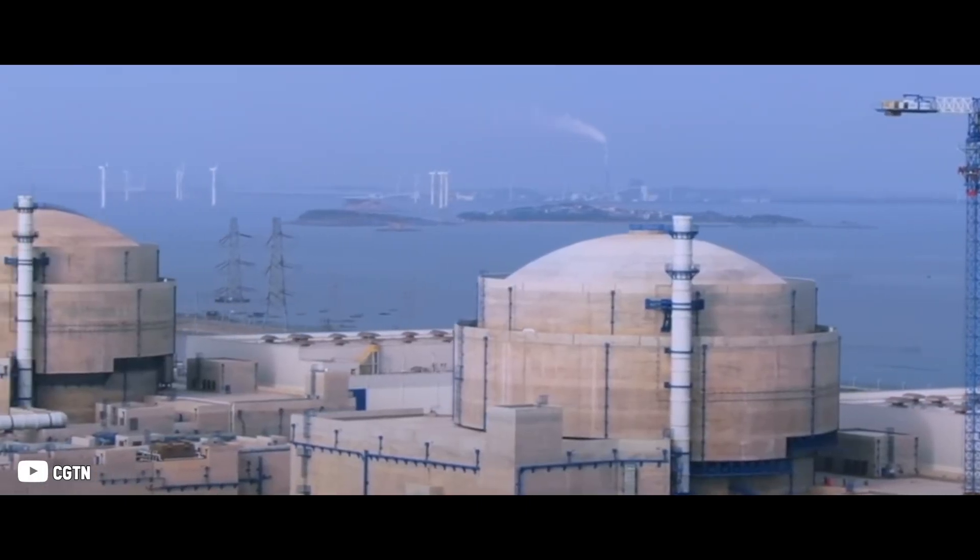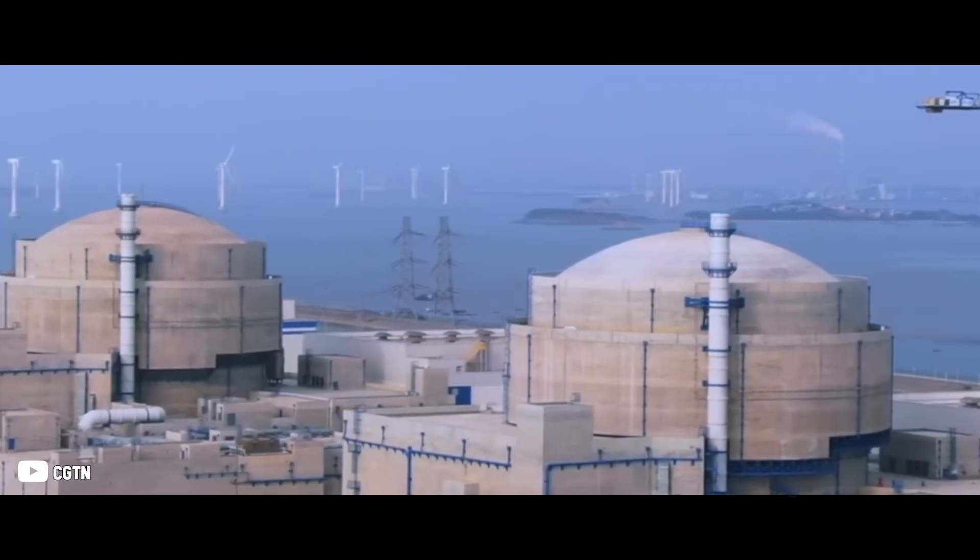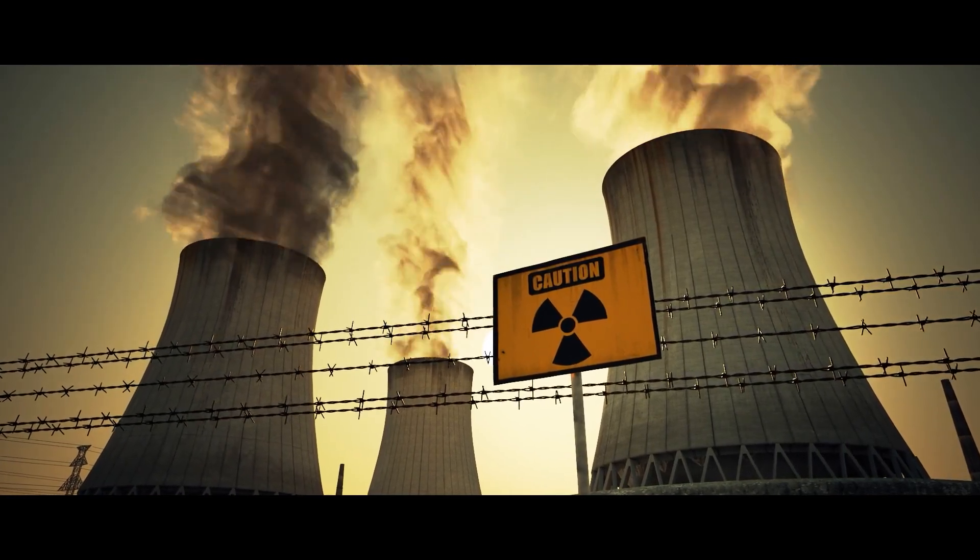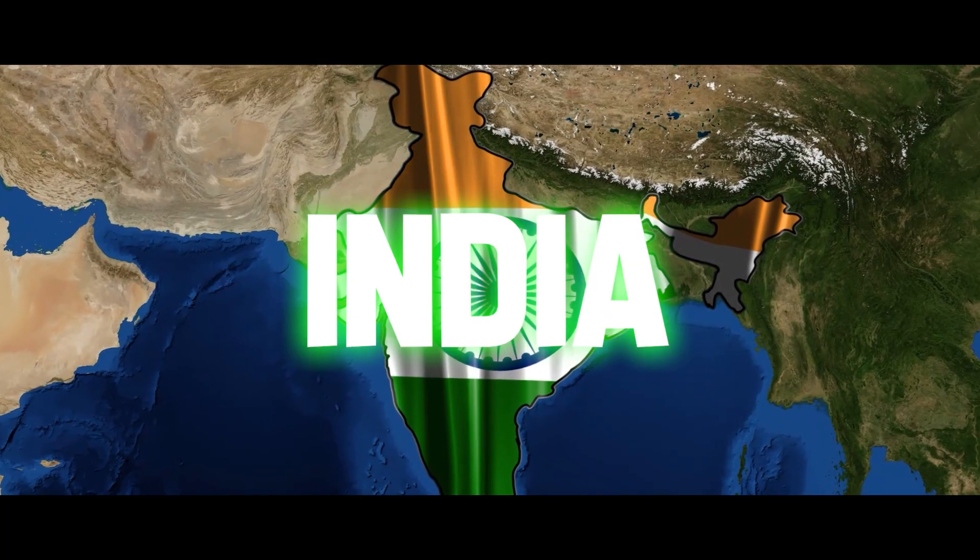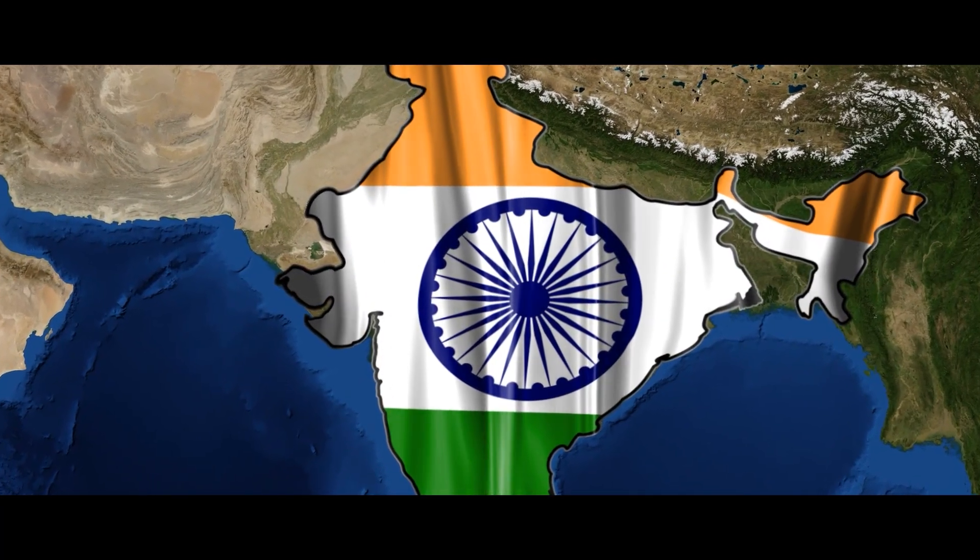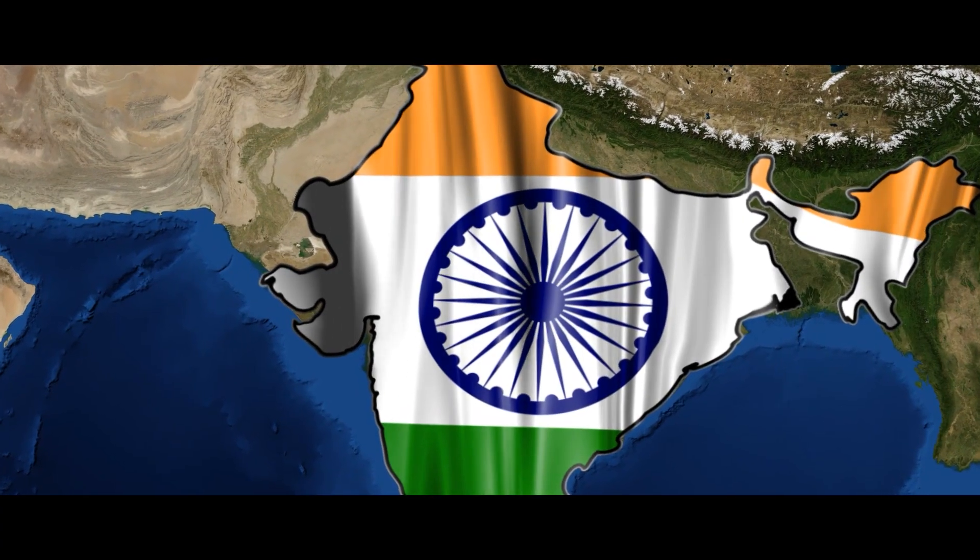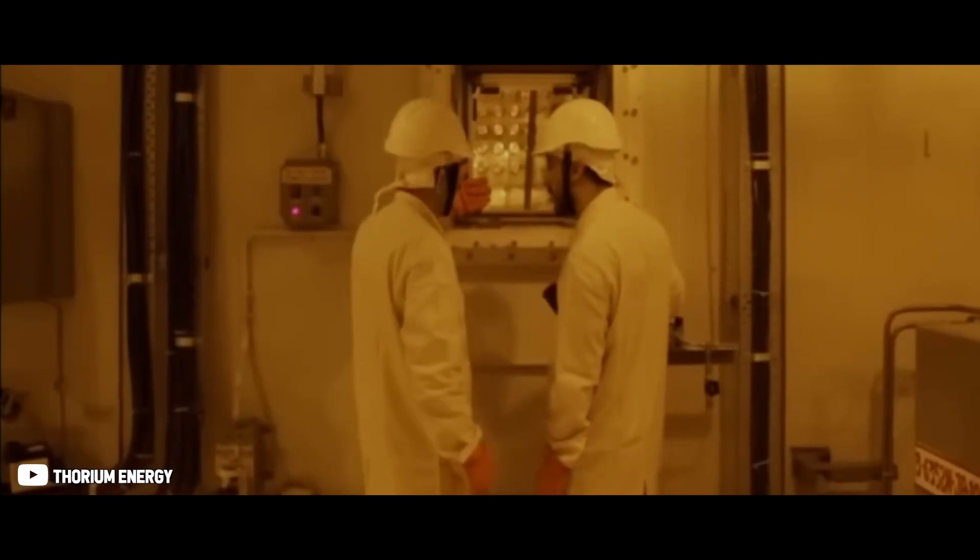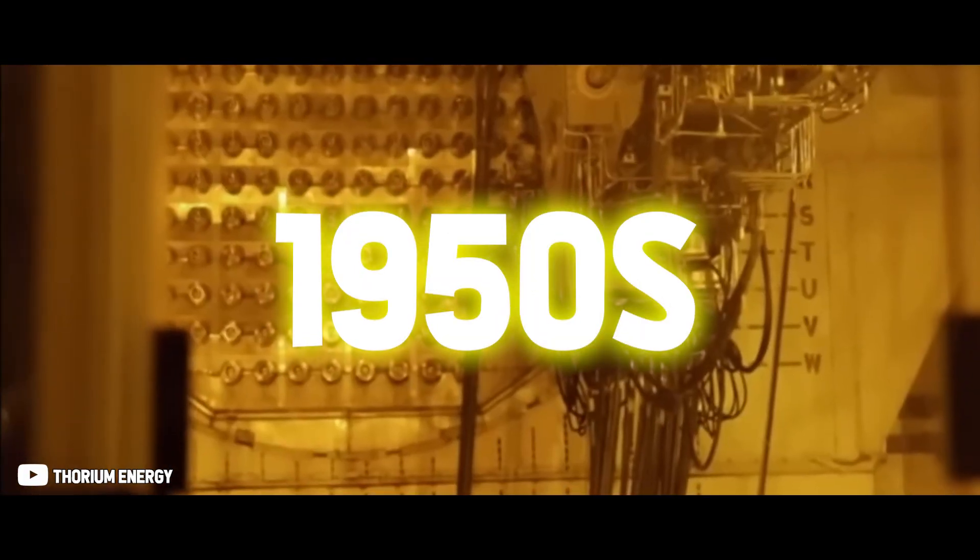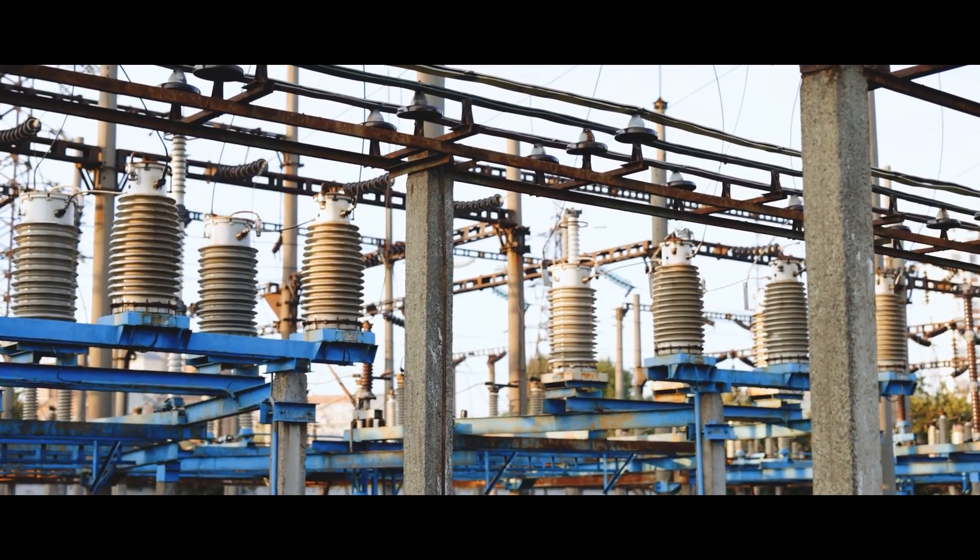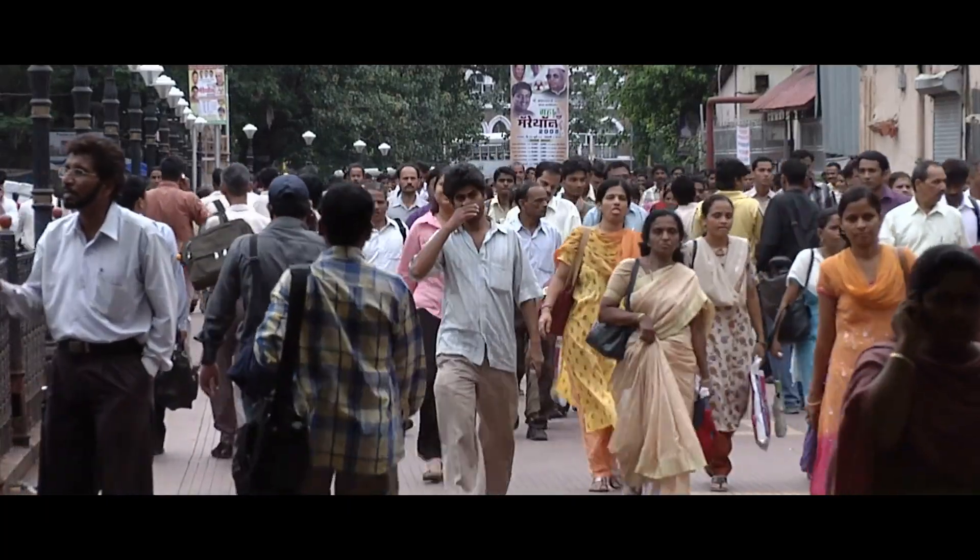In essence, the thorium reactor extracts energy from both thorium and nuclear waste while reducing the waste's radiotoxicity. India accounts for 25% of the world's known thorium reserves and is home to the world's largest natural thorium supply. Therefore, they introduced a three-stage nuclear power program in the 1950s to secure energy independence and supply its massive growing population.